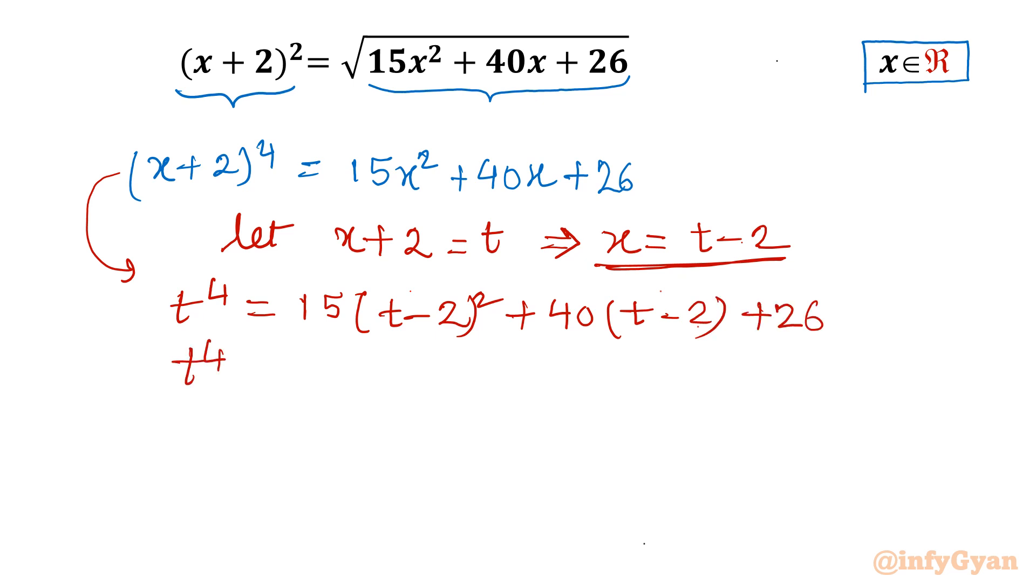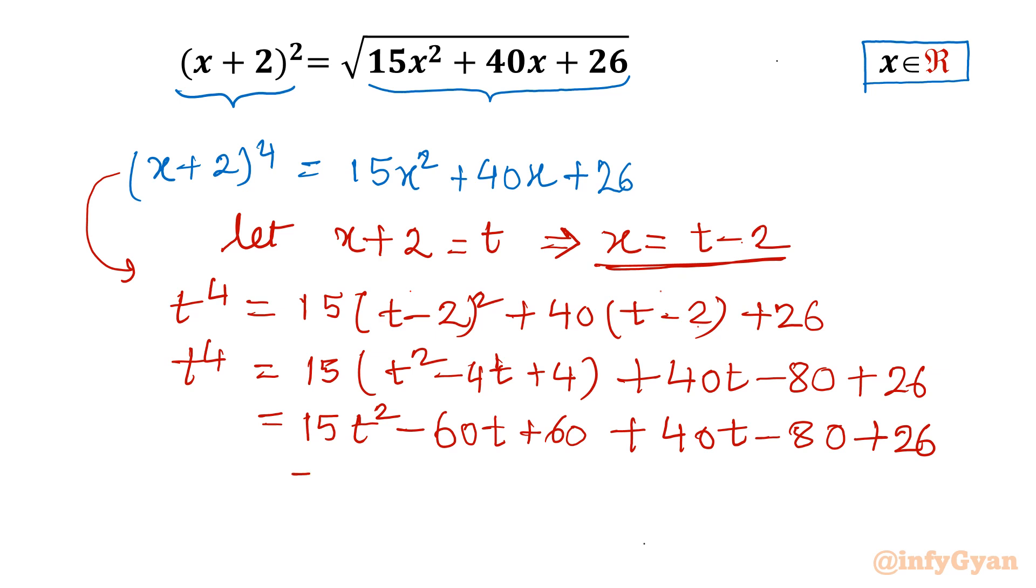So here we can write t⁴ = 15(t-2)² + 40(t-2) + 26. Now open it, take the product, resolve the right hand side. I will write 15(t² - 4t + 4). Then I will be writing 40t minus 80. Then 26 is there. So 15t² - 60t + 60 + 40t - 80 + 26. 15t² - 20t + 6. And left hand side is t⁴. Now I will take all the terms to LHS or one side. So t⁴ - 15t² + 20t - 6 = 0.